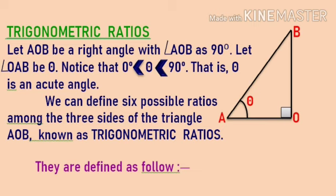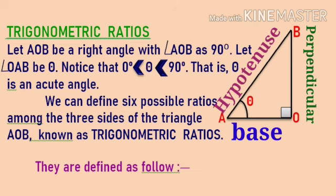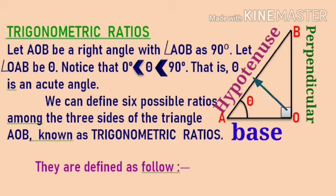Yes, theta is an acute angle. One thing you must keep in mind: the side opposite to the angle theta is called perpendicular, whereas the side adjacent to angle theta is called base. The side opposite to the right angle is known as hypotenuse. Now we can define six possible ratios among the three sides of triangle AOB, which are known as trigonometric ratios.